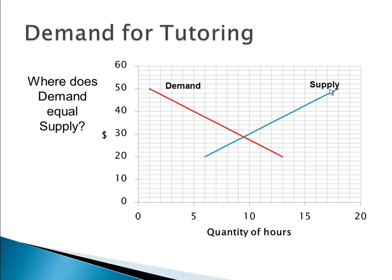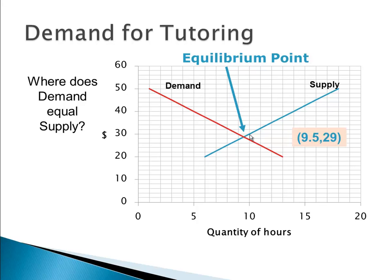One of the important economic ideas is: where does demand equal supply? They call it the equilibrium point. That's basically where the two graphs cross each other — where the demand curve intersects the supply curve. Graphically, my guess is something like 9.5 hours and about $29. When the price is $29 and people are willing to pay that per hour for tutoring, we're going to have a supply that matches that demand. Everybody's happy — the people who want tutoring are getting the amount of tutoring that they desire.